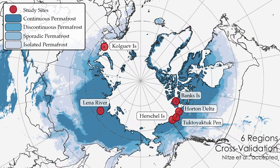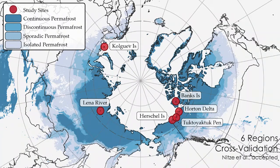To test our model and the application, we chose six regions across northwestern Canada and Russia: Kolguiev Island and Lena River slumps in Russia, and Herschel Island, Tuktoyaktuk Peninsula, the Horton Delta region, and Banks Island in northwestern Canada. We applied a regional cross-validation where we trained the model on five regions and validated on a sixth one, rotating through all regions. As thaw slumps can look very different depending on sediment, vegetation, coastal setting, valleys, or lake contexts, we tried to incorporate all these different attributes.